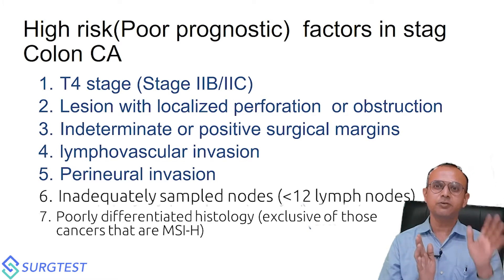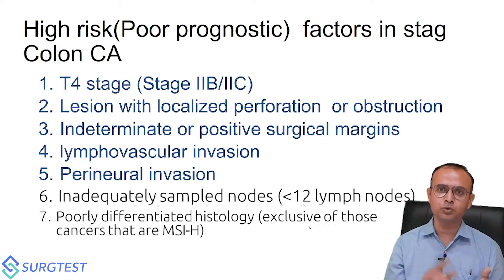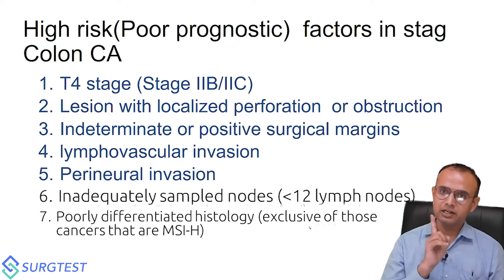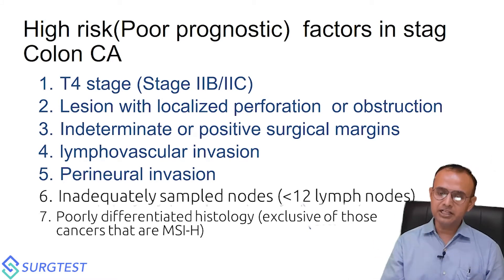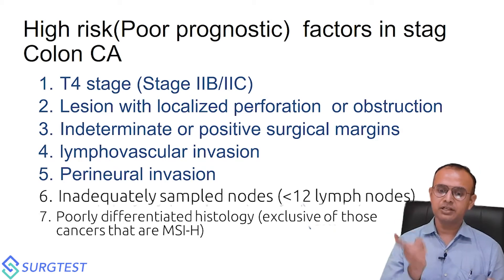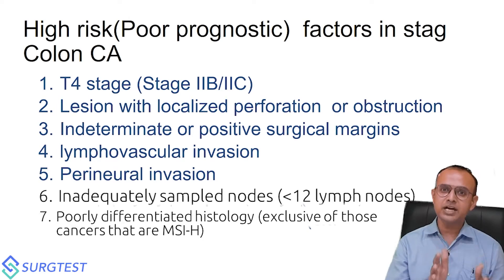So in stage two, we need to understand what the high-risk features are. If high-risk features are present, we have to consider giving chemotherapy. These seven factors are: T4 disease, emergency surgery due to perforation or obstruction from cancer, indeterminate or positive resection margin, lymphovascular invasion, perineural invasion, inadequate lymph node sampling (less than 12 nodes), and poorly differentiated histology.